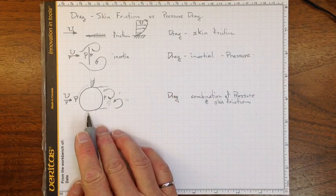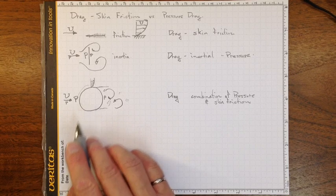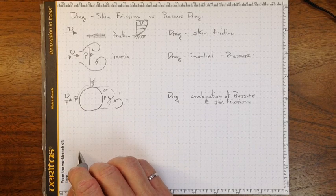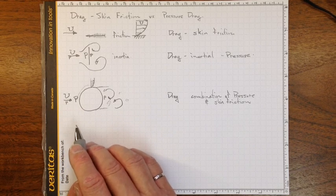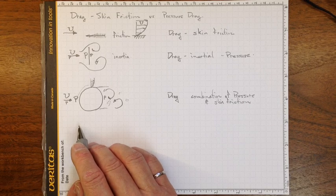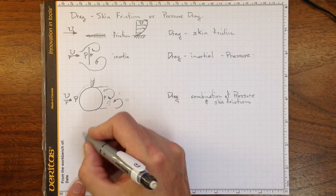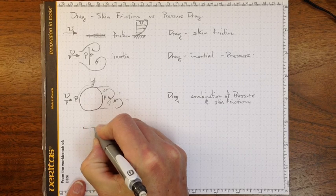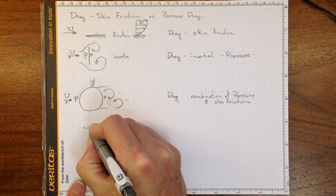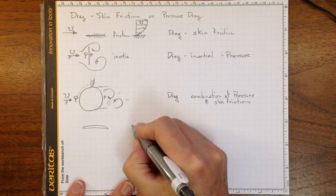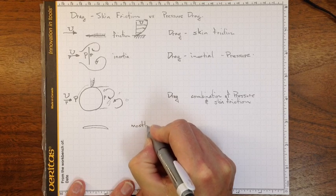So whether we're looking at a car, or a basketball, or a person standing out in the wind, they'll all have some combination of pressure drag and skin friction drag. If we're looking at a highly streamlined object like an airfoil, mostly skin friction.